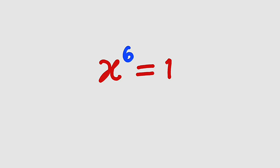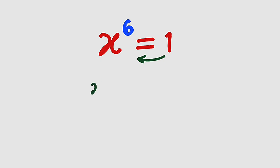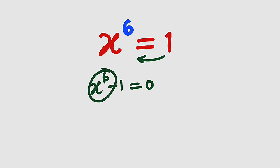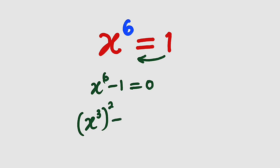Alright, let's get started. First of all, I would like to take 1 to the left hand side. So we have x to the power of 6 minus 1 equal to 0. And I know that x to the power of 6 can be written as x to the power of 3, all squared. So we have x to the power of 3, all squared, and also 1 can be written as 1 squared. This is also equal to 0.